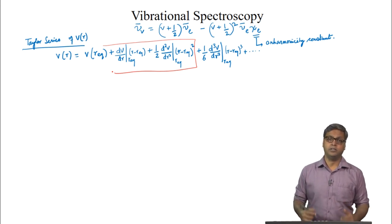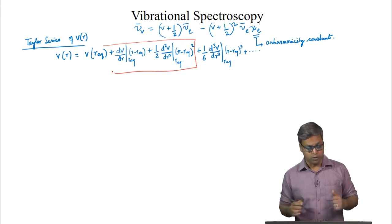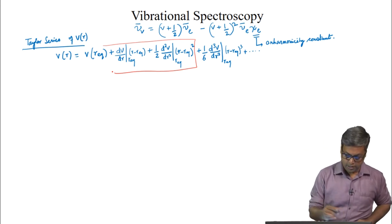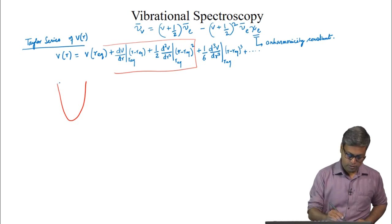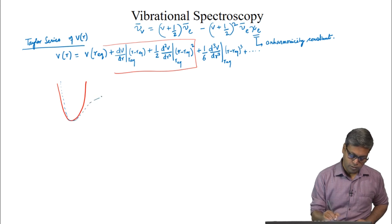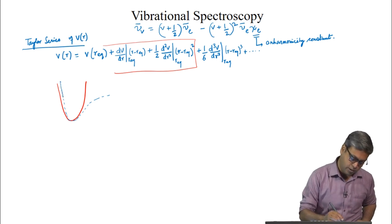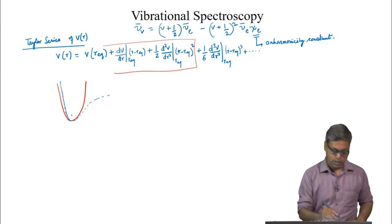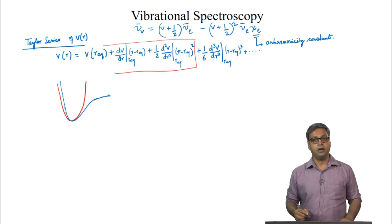Let us look into the differences in the shapes of the anharmonic and the harmonic potential. The anharmonic potential is steeper at r less than r_equilibrium and shallower at r greater than r_equilibrium.